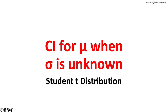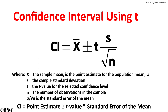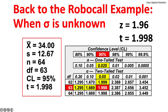Let's construct a confidence interval for the population mean using the Student t-distribution. The formula is very similar to that using Z values, with two changes. One, the critical value for T is used instead of Z — T critical values are slightly larger than Z, resulting in wider confidence intervals, with the difference diminishing as sample size increases. Two, the sample standard deviation is substituted for the population standard deviation. Back to the robocall example: degrees of freedom equals 63 (sample size 64 minus 1). The critical value for T is 1.998, not 1.96, and the larger critical value results in a wider confidence interval.